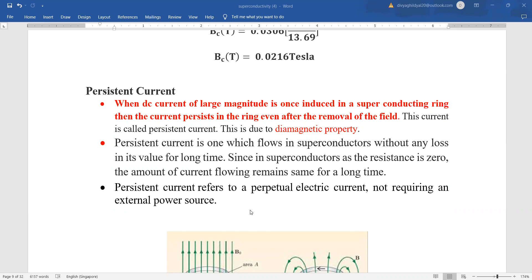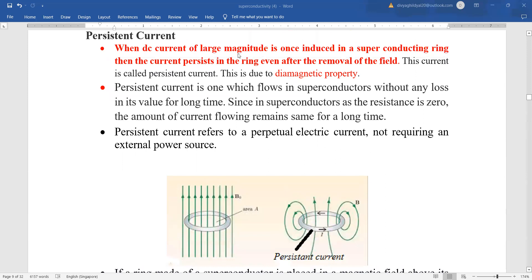Persistent current. The word persistent means constant. When a DC current of large magnitude is induced in a superconducting ring, look at this diagram here. In this superconducting ring, a current has been induced. Then the current will persist in the ring even after we have removed the field. This current is called persistent current and it has happened because of the diamagnetic behavior which is shown by superconductors.